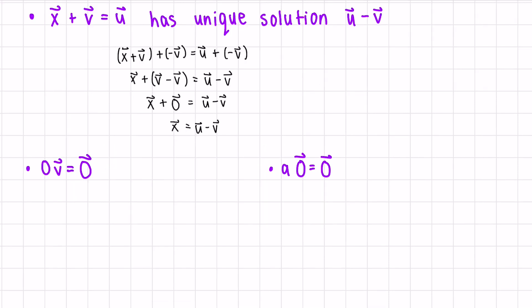The next property is that zero times a vector is the zero vector. This might seem obvious, but let's show why. We start with zero times v and rewrite it as (0 + 0) times v. By distributivity of scalar addition, this is 0v + 0v. On the left side we also write 0v, and by the cancellation law — adding the zero vector to one side — we conclude that zero times v equals the zero vector.